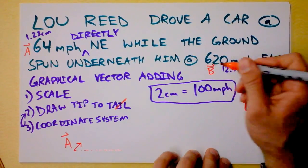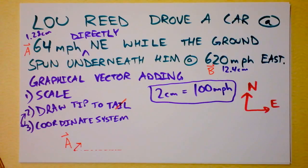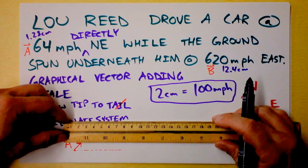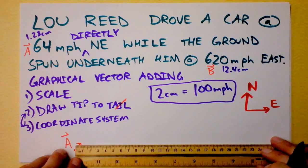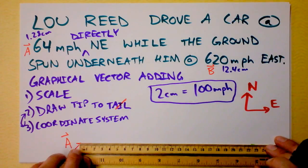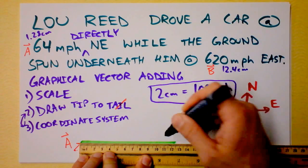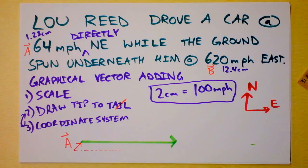We could call the earth's rotation Vector B. Vector B is much longer — 12.4 centimeters directly to the east. I'm going to switch to a different color — electric lime — and go directly east, parallel to the sheet of paper, measuring out 12.4 centimeters. And I stop. Try this at home — draw these out. This is the graphical method of vector addition.